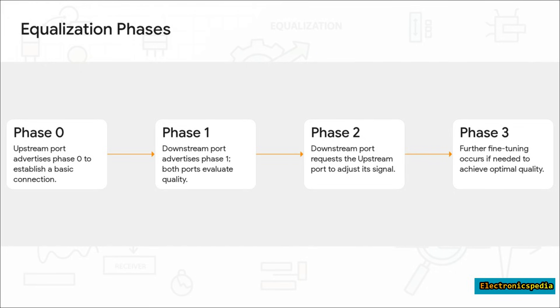This handshake happens in four distinct phases. Phase 0 is about making a basic connection. In phase 1, both devices check the quality of that connection. If it's not crystal clear, they move to phase 2. This is where the receiver actively tells the transmitter how to adjust its settings, like saying 'speak up a bit' or 'enunciate more clearly.' Finally, if they need to, they enter phase 3 for some final tiny adjustments. This makes sure they find the absolute best settings for that specific physical connection.